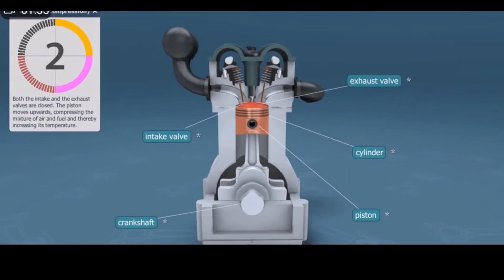The second stroke is compression. Both the intake and the exhaust valves are closed then. The momentum of the crankshaft and the counterweight causes the piston to move upwards, compressing the mixture of air and fuel and thereby increasing its temperature.